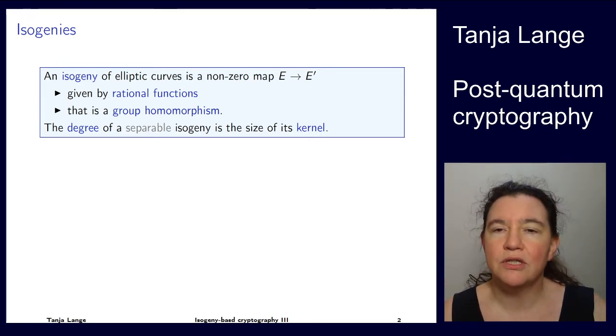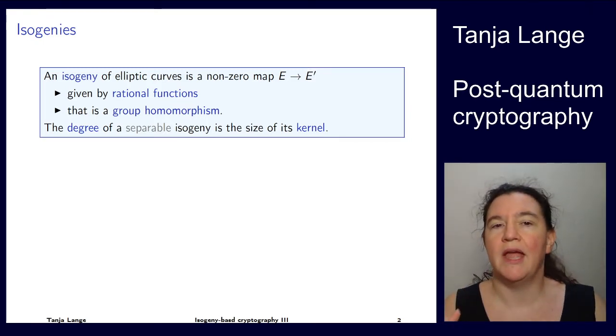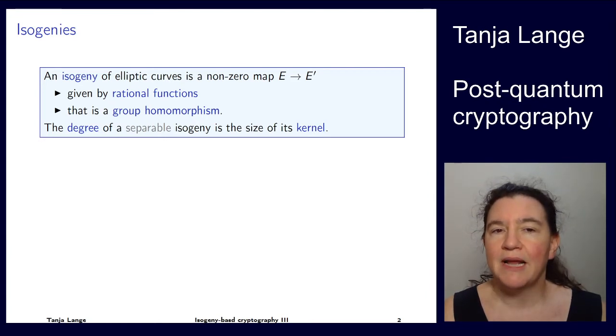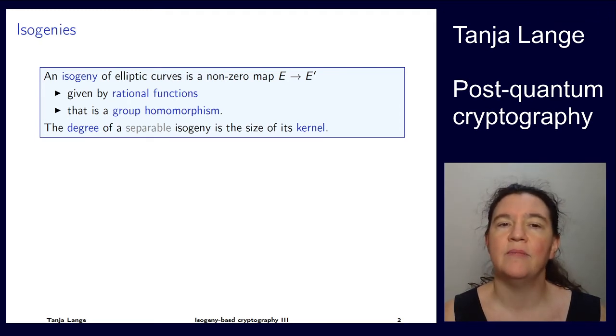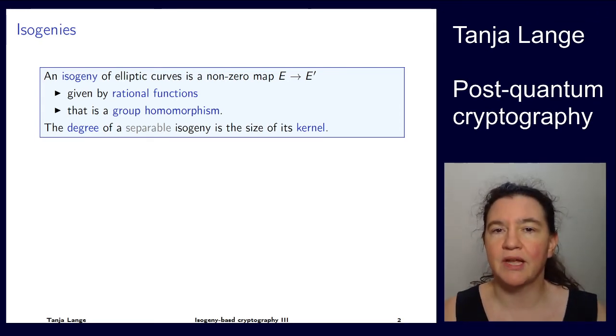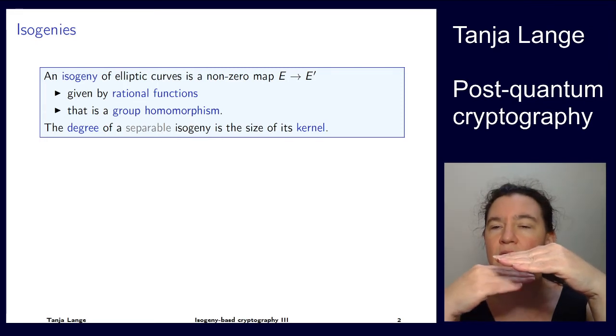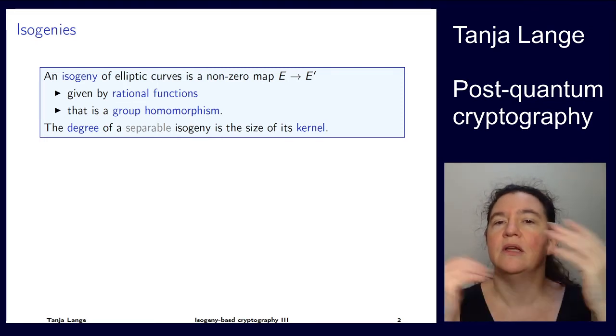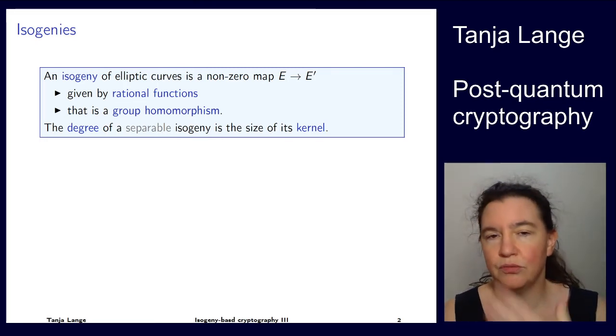Now what isogenies are, these are maps between two elliptic curves. And we do insist that this is not the zero map, so it doesn't map all of E to the infinity point on E prime. But unlike isomorphisms, these can have some exceptions. So these don't have to be given by polynomials, they can be given by rational functions. So there can be a fraction, and for the roots of the denominator, those points disappear to infinity.